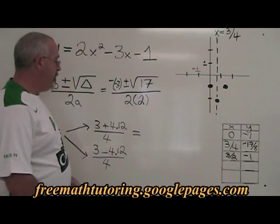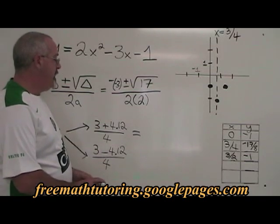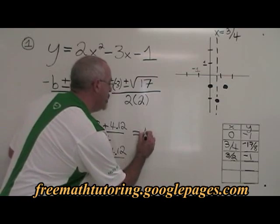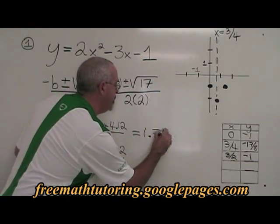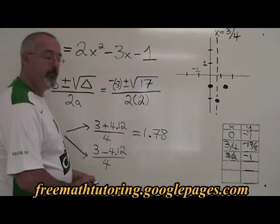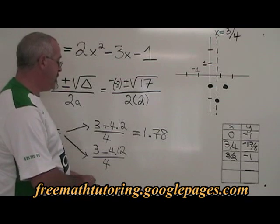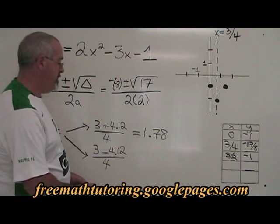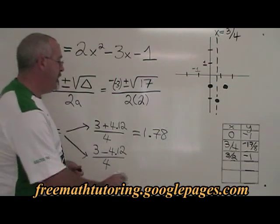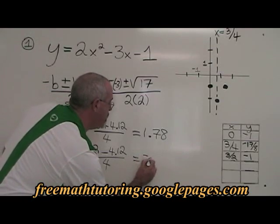With the plus, 3 plus 4.12 divided by 4 is 1.78. With the minus, 3 minus 4.12 divided by 4 is negative 0.28.